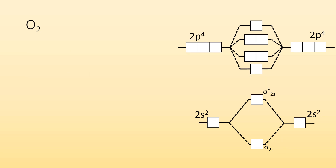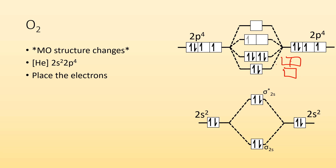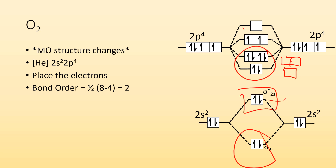O2 — remember the structure changed for oxygen. The molecular orbital structure now has sigma 2p lower, so it's one on the bottom and two pi up top. Same process though: oxygen is 2s2, 2p4. Place all 12 electrons into the molecular orbitals. We have 8 bonding electrons and 4 anti-bonding electrons, giving a bond order of 2. That's consistent with what we already know about oxygen — it has a double bond.